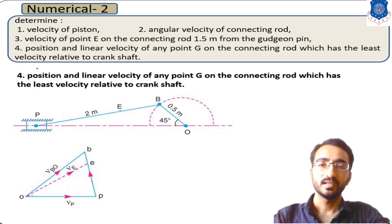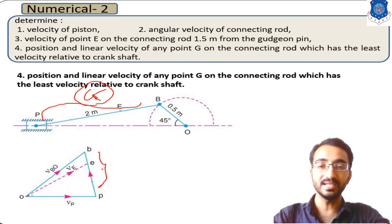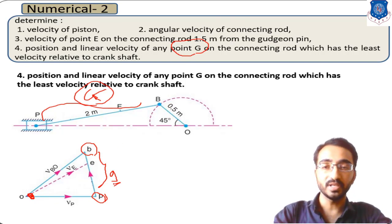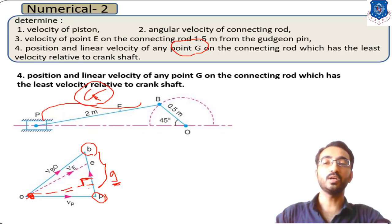To find point G, we consider that the point lying on the connecting rod producing the minimum absolute velocity will have the minimum distance from point O on the velocity diagram. So we need to find the point on line PB that has the minimum distance from reference point O. The line with minimum length from a fixed point to a line is always the perpendicular to that line.